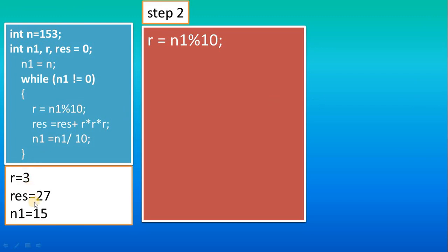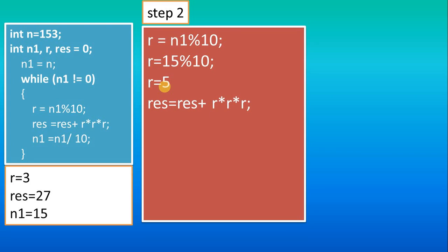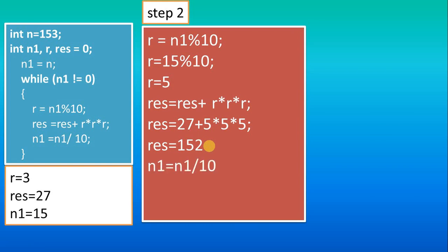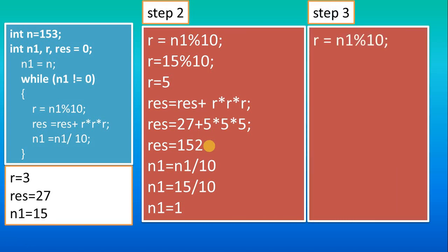In the next iteration the updated values are: n1 is now 15. We calculate r = 15 % 10, so r is 5. Then we do 5 cubed and store it in res. The previous res value was 27, so res plus 5 cubed gives res updated to 152. Next, we do the divide operation: 15 / 10 = 1, so n1 becomes 1. Then in Step 3 the same process continues.